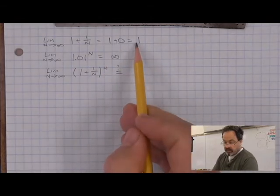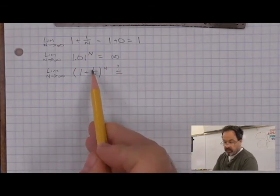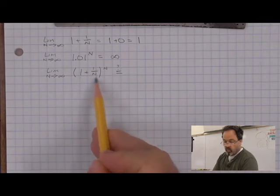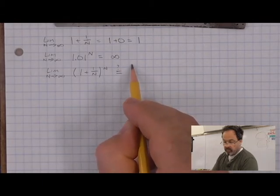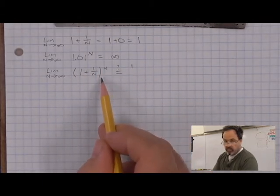It's suggested by this limit here that if this in parentheses becomes 1, then 1 to any power is going to remain 1. So maybe the limit of this expression is 1.